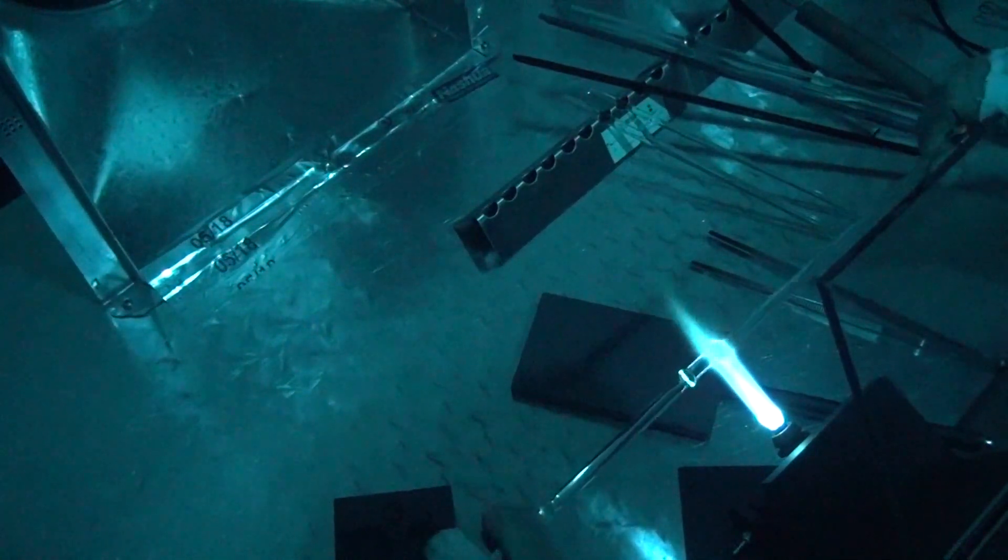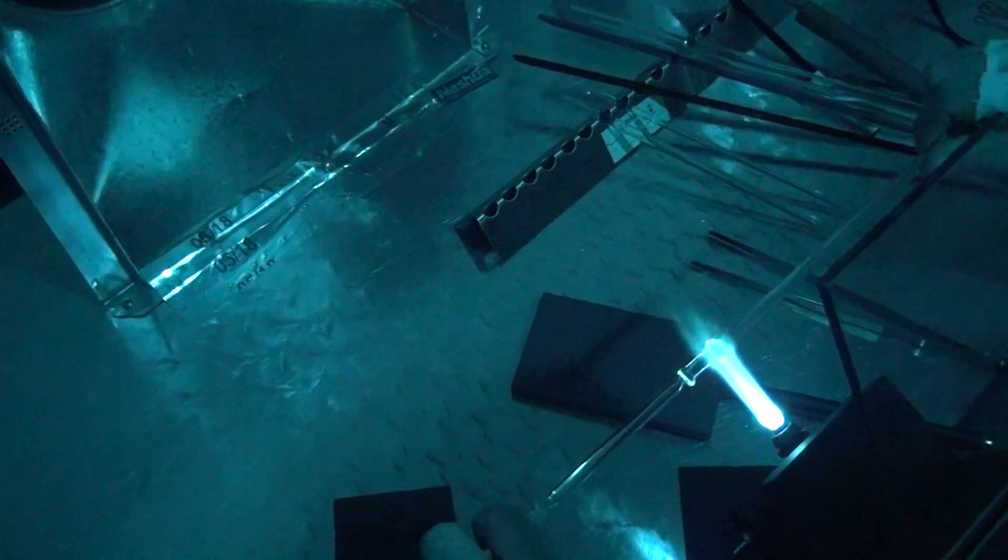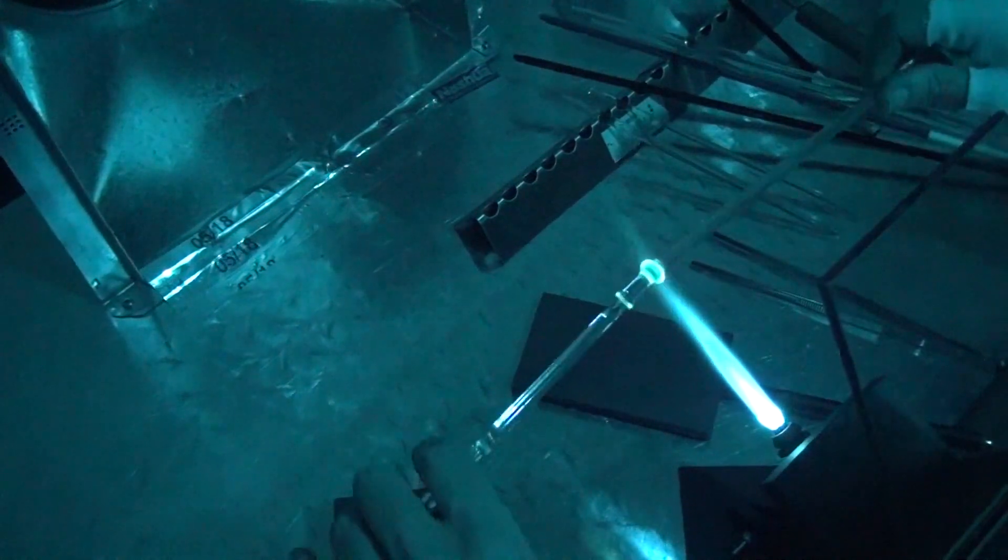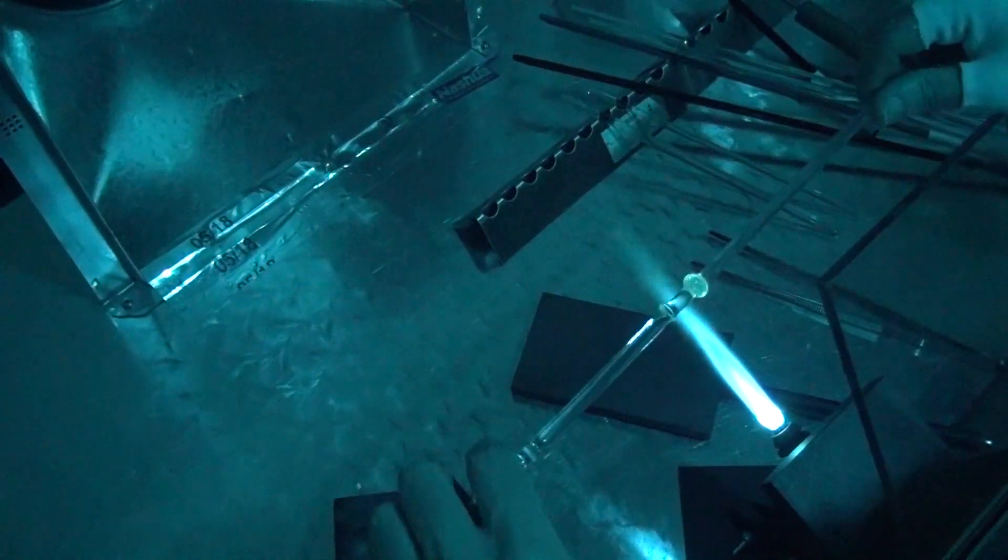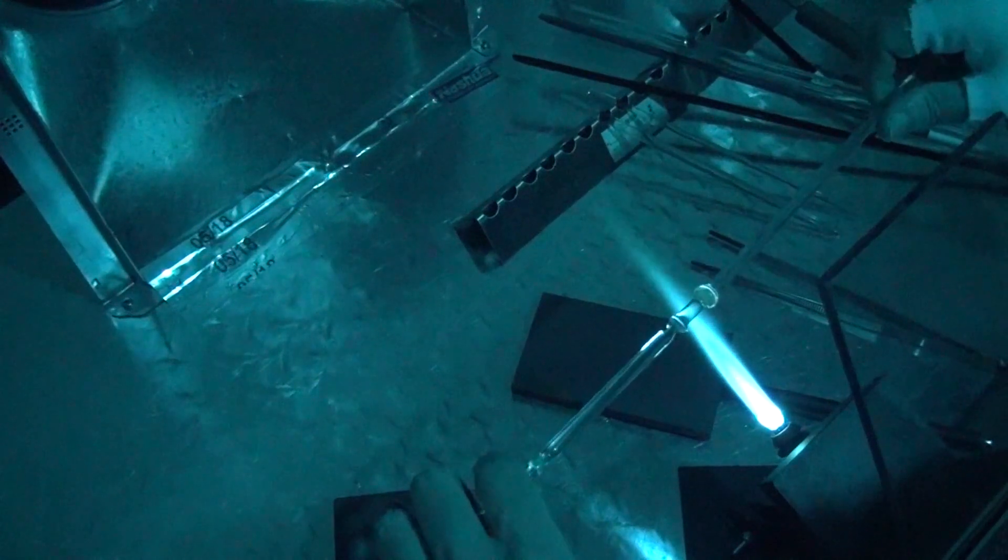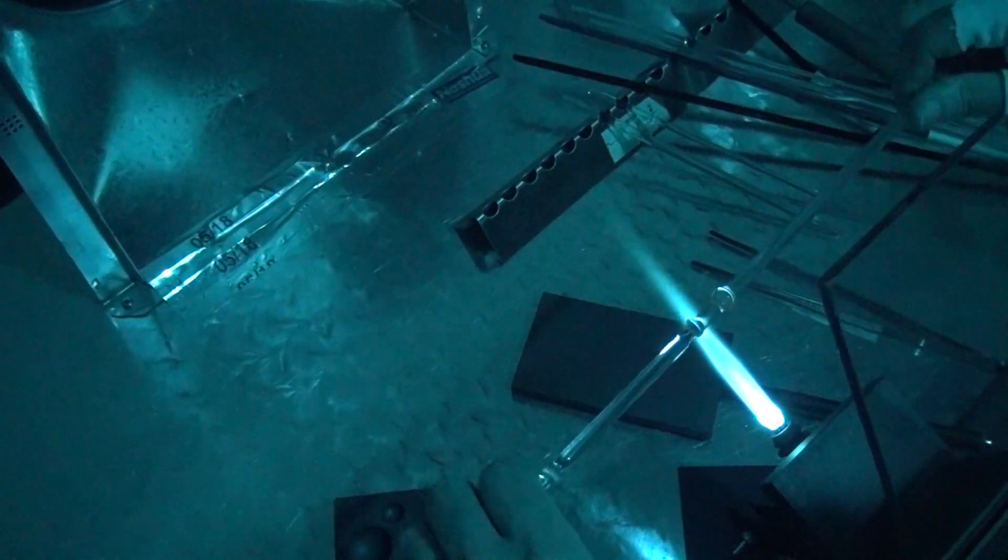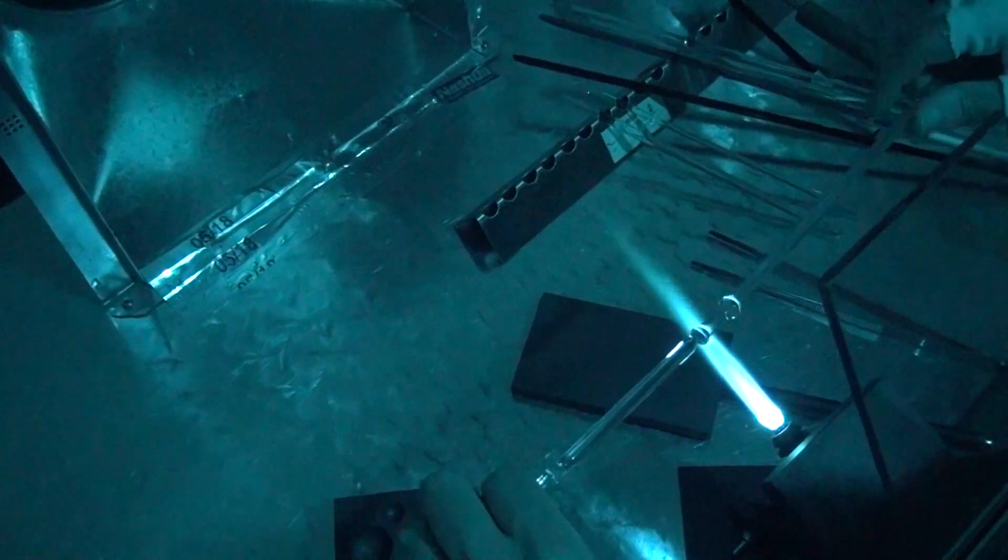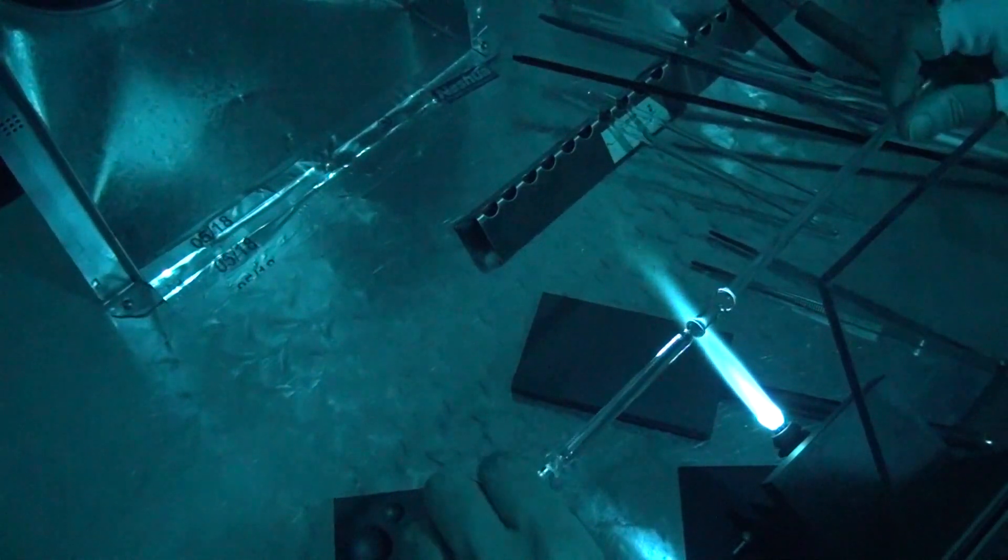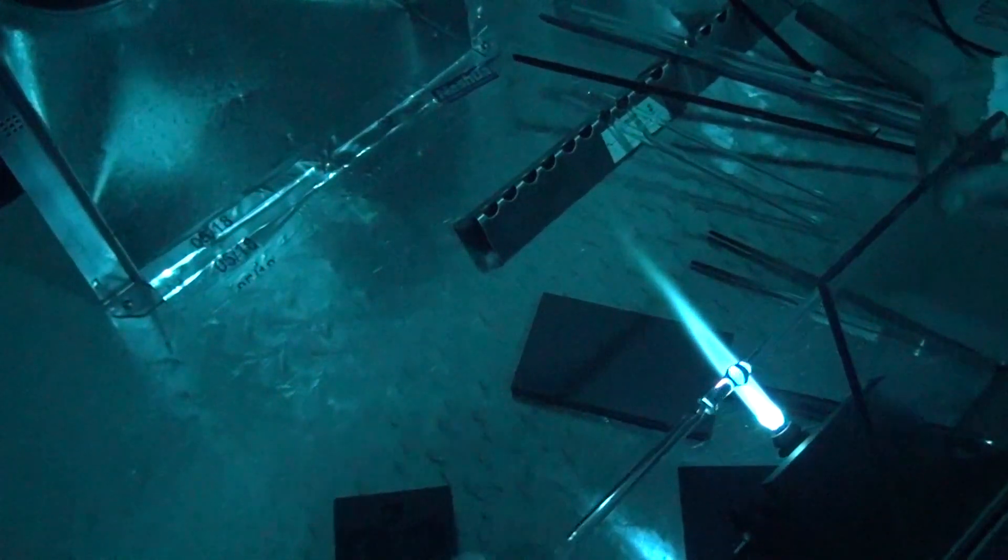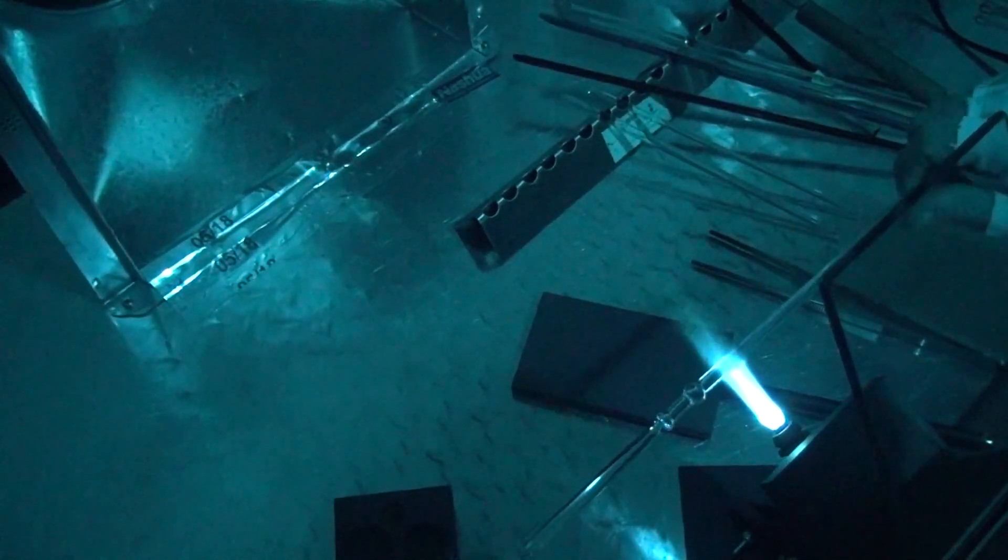But once you have that just about the size that you want, then come out of the flame, straighten it and let it set up. Keep rotating while you look at it. Then just go down the rod a little bit and do another one.